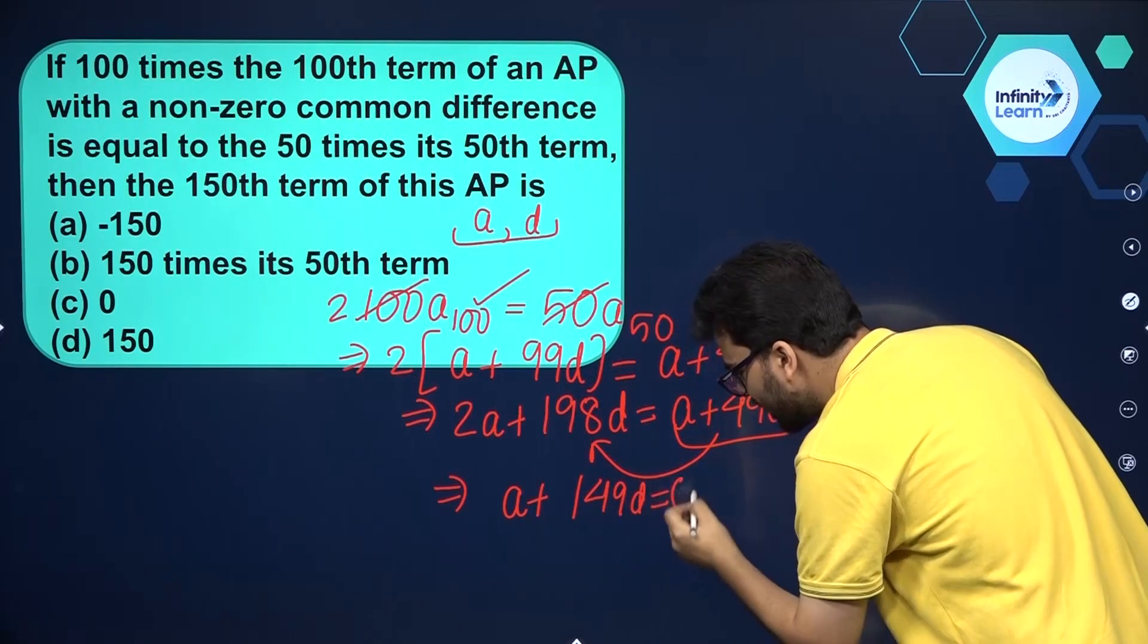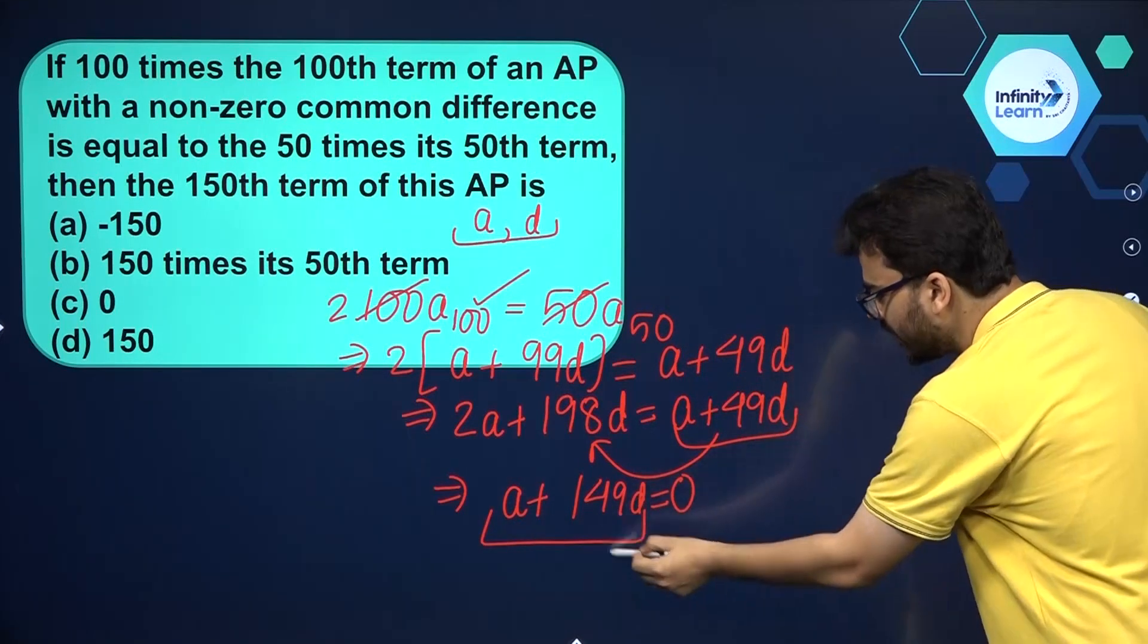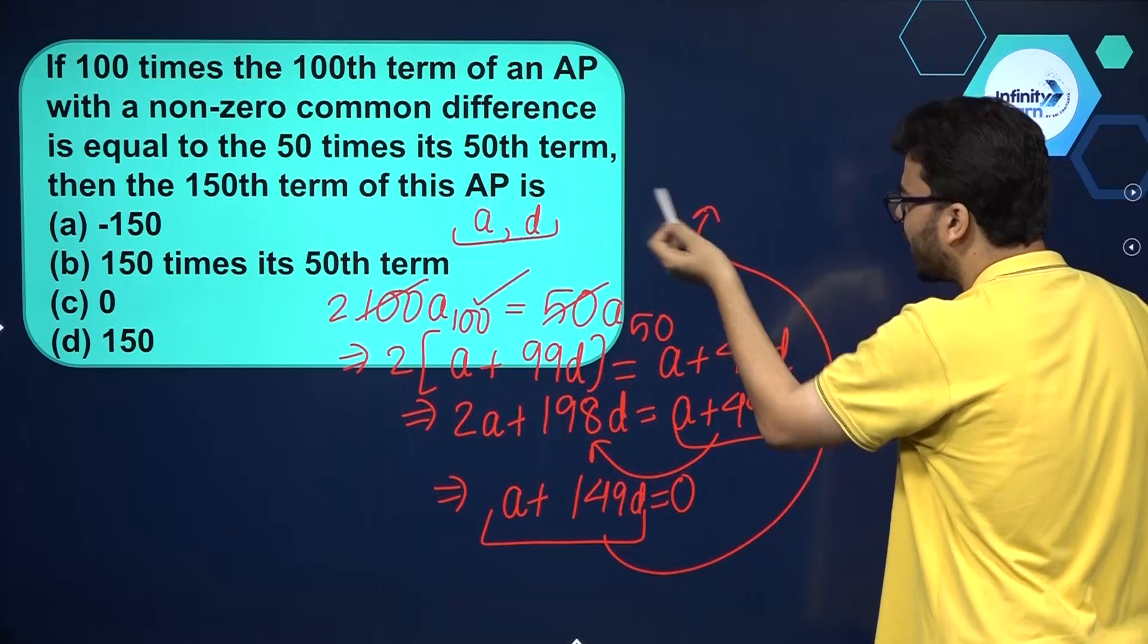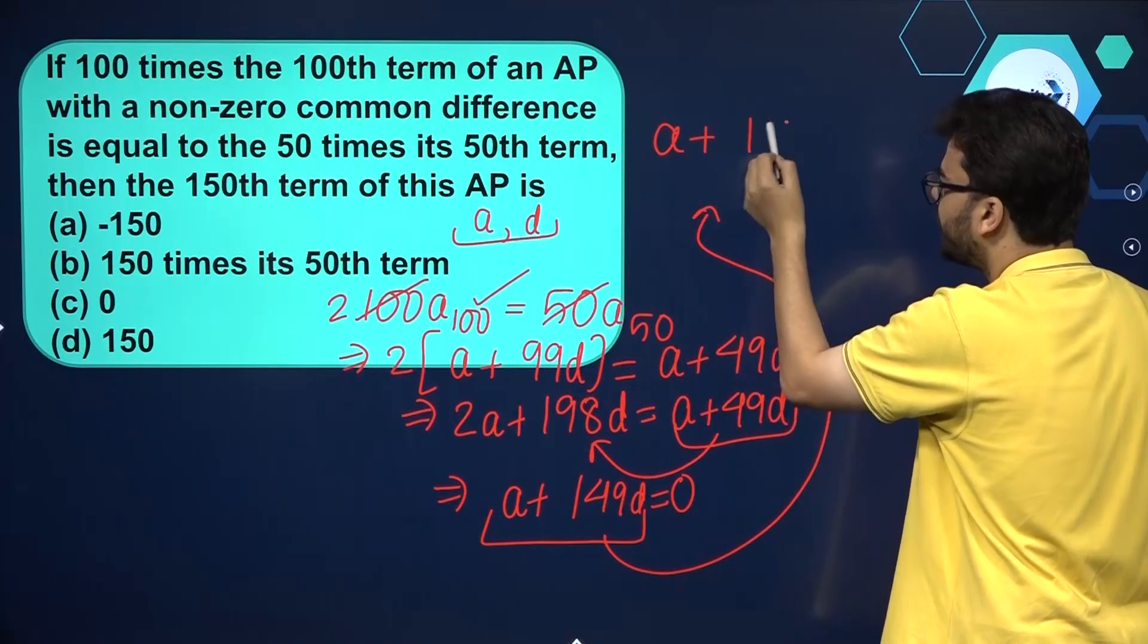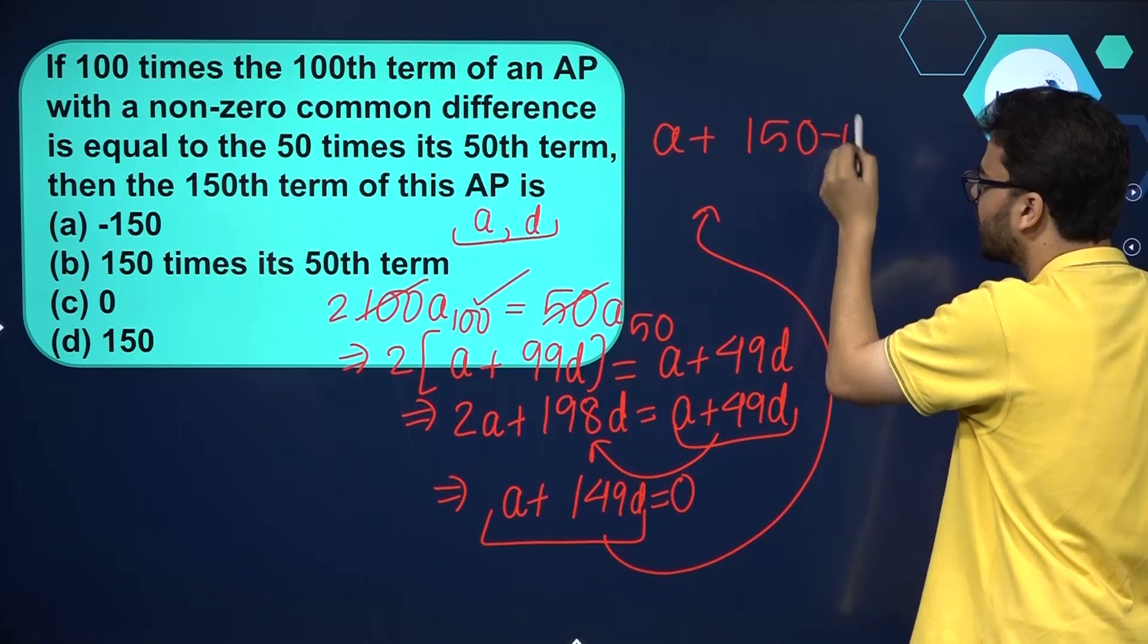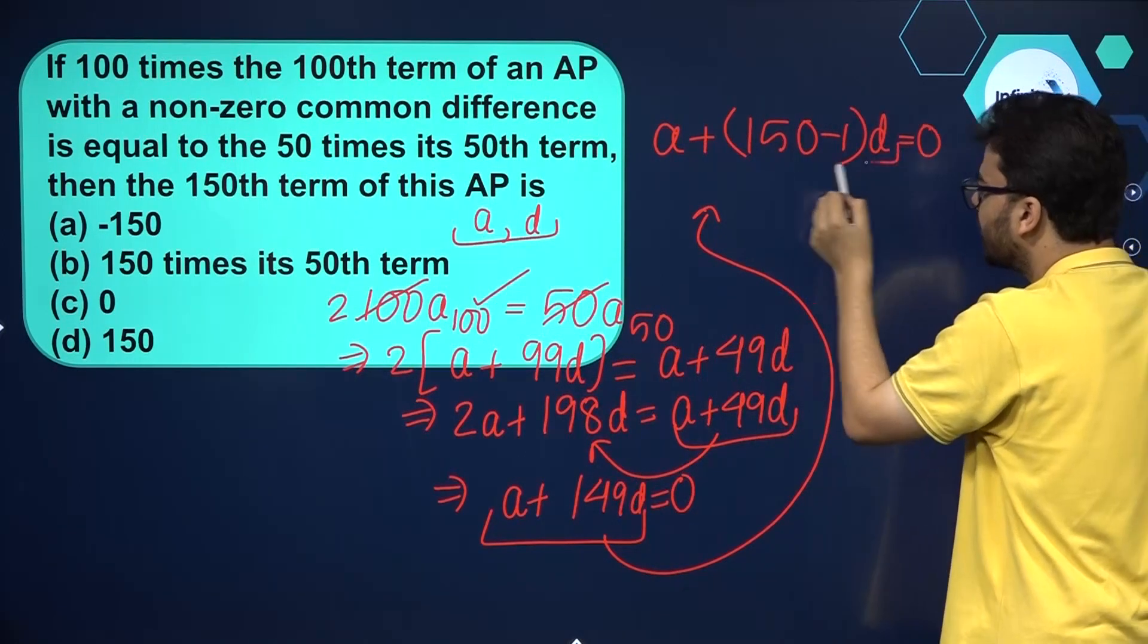Now what is this equal to? A plus 149D, if you simplify, is nothing but equal to A plus 150 minus 1 into D, which is nothing but the 150th term of this AP.